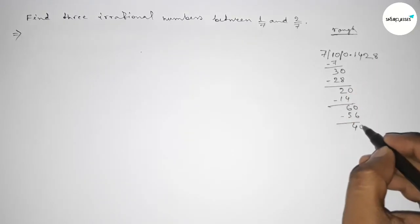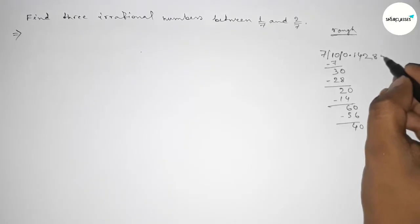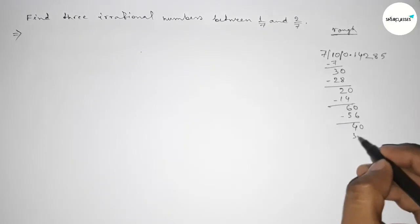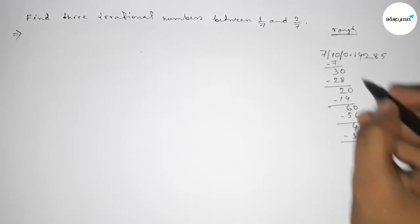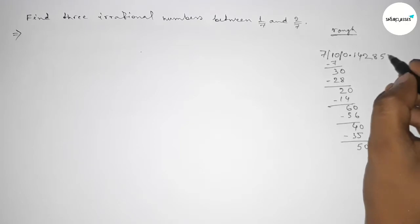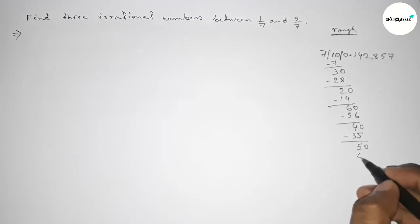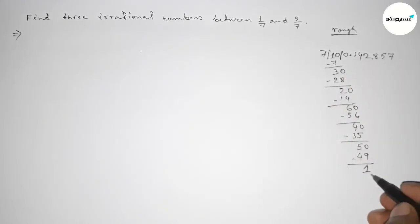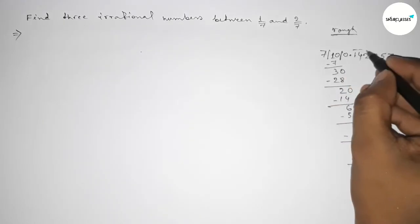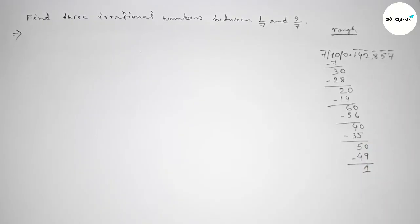For the next point we get 0. 7 into 60 is 56, subtracting gives 4. For the next point we get 0. 7 into 70 is 49, subtracting gives 1. Here we get 1, so it's repeating. From this we can see that these are repeating decimal numbers.